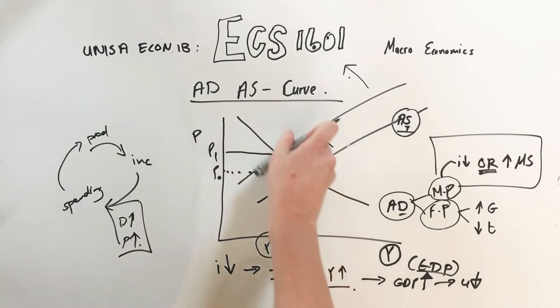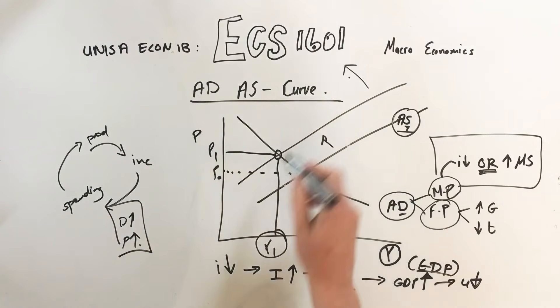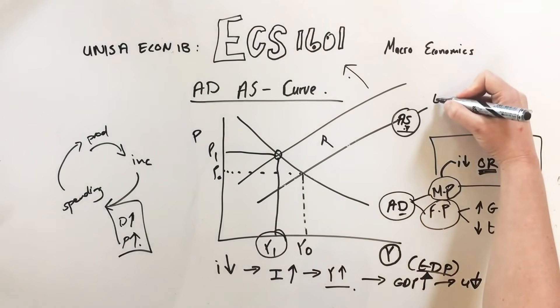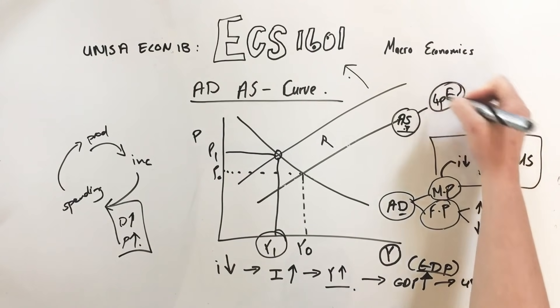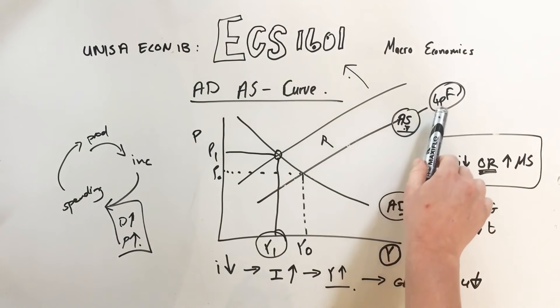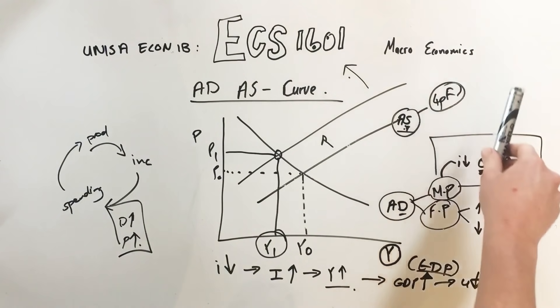So how do we prevent stagflation? What moves the AS curve? It's the four production factors, so try to keep the input costs low. For example, try to keep wages, don't let wages rise unnecessarily high, or manage the four production factors.